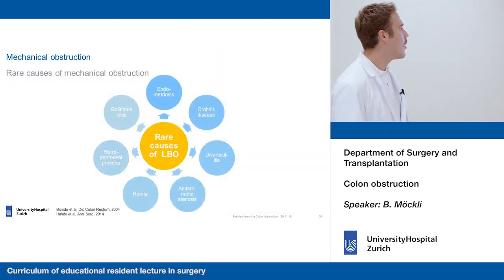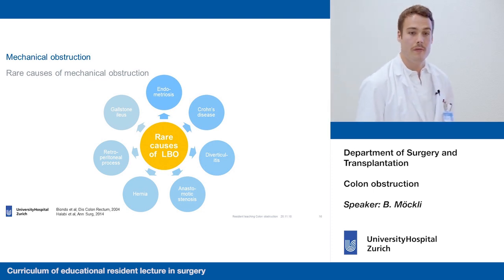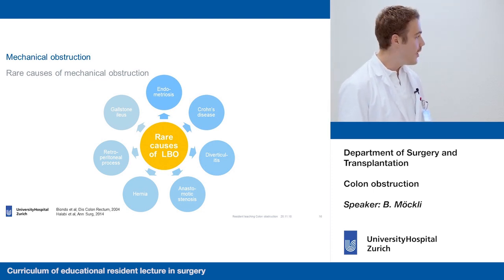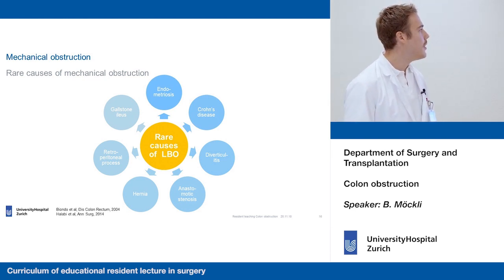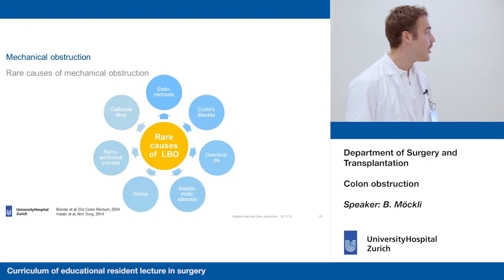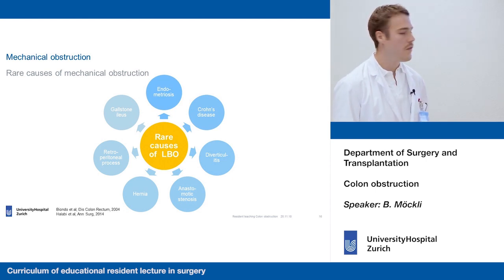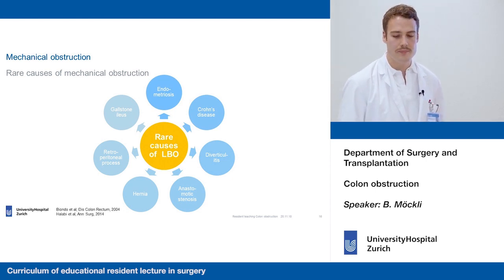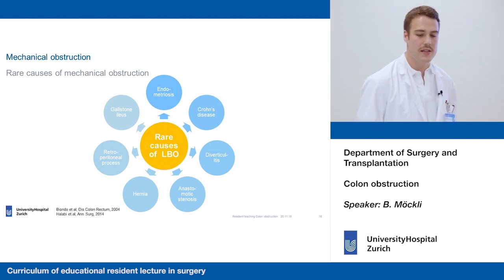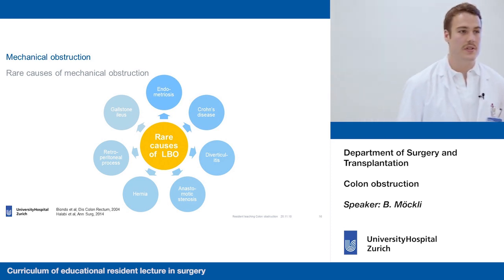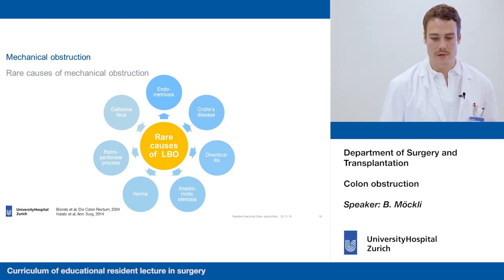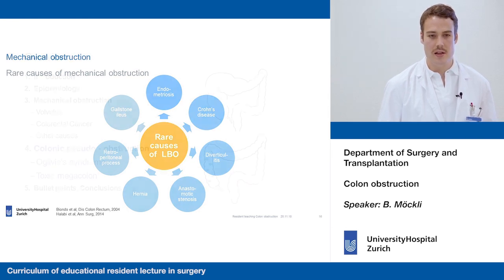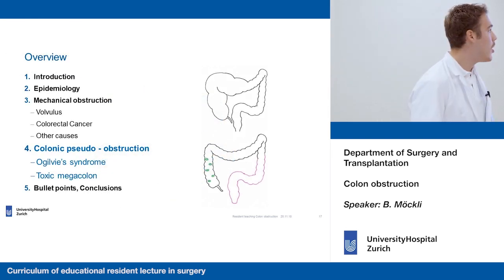There are also many other causes of mechanical colorectal obstruction: endometriosis, Crohn's disease, diverticulitis — which is actually the most common of these other causes — anastomotic stenosis, hernia, retroperitoneal processes, malignancies, and also gallstone ileus with a few case reports describing this as a possible cause.